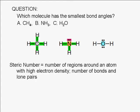For water, the steric number of the central atom is also four. There are four groups of electrons sticking out of the oxygen: one, two, three, four.